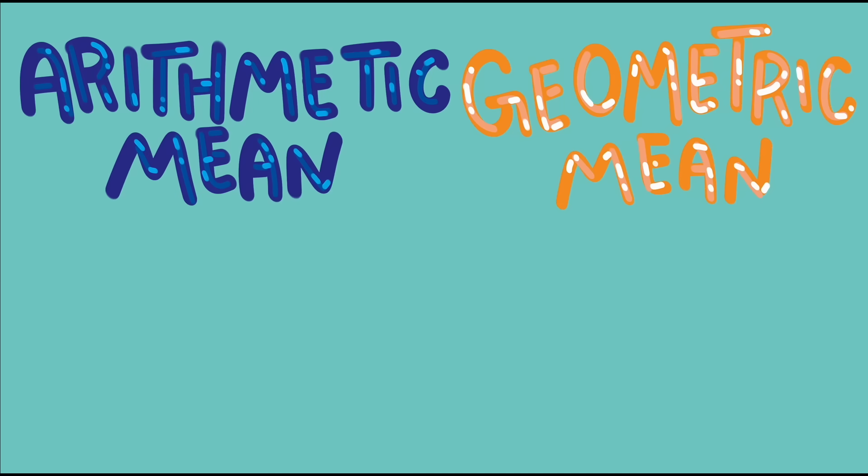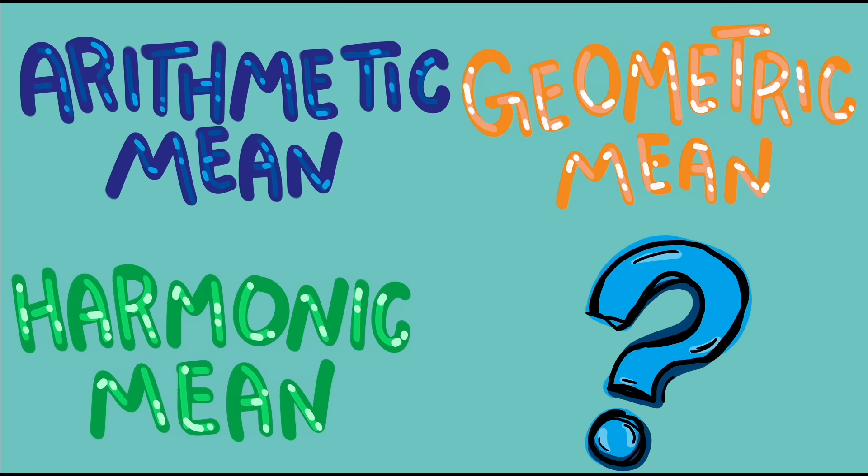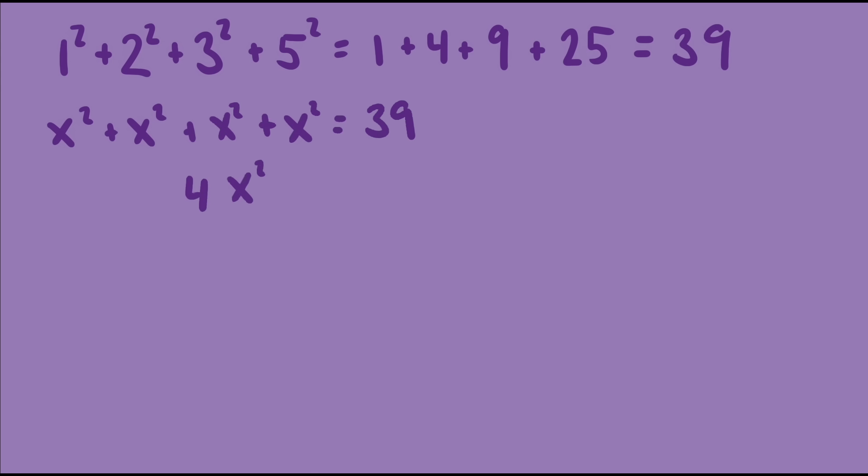So we have seen three different ways to calculate totals, and each one requires a different method for finding the mean in that context. We could just make up some method to calculate a new total from a set of values, and there would probably be a different mean involved. For example, we could square all the numbers before adding them up. We can set up an expression to find the mean in this situation, replacing each value with x, and then solving.